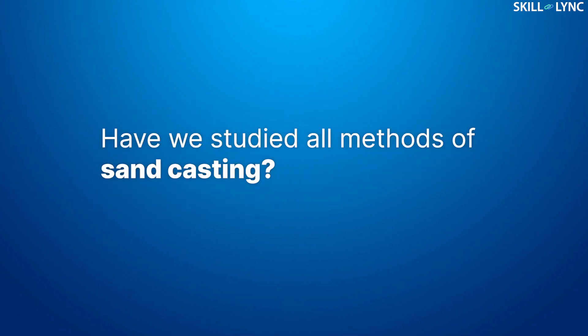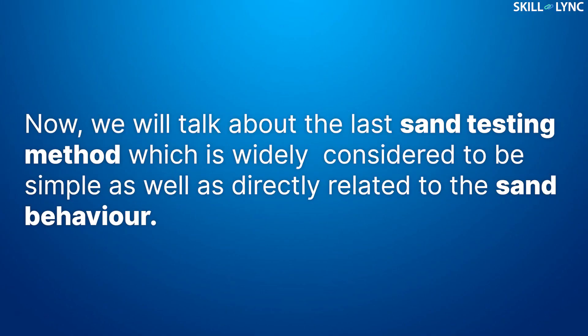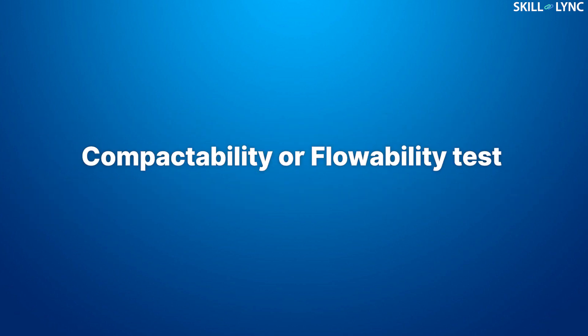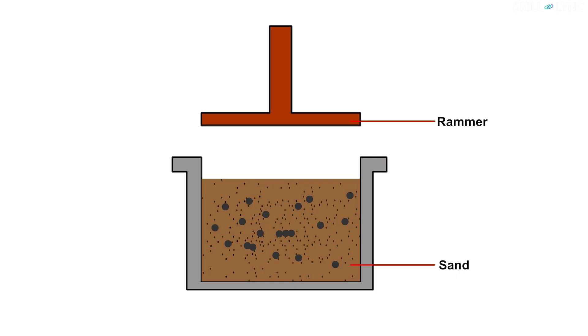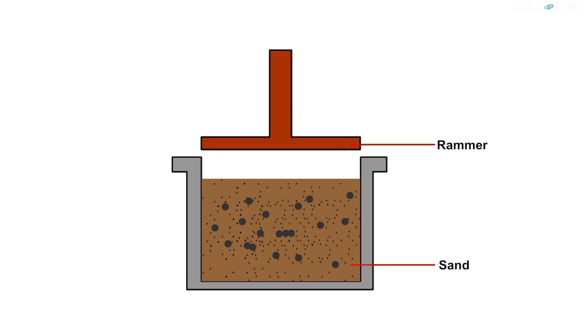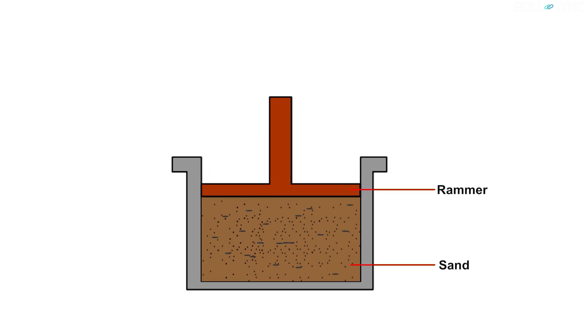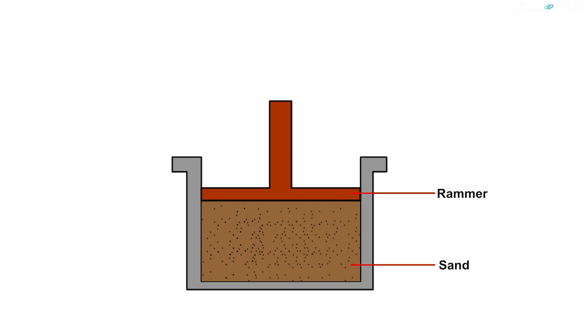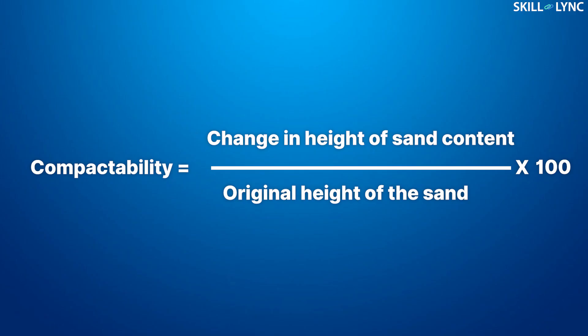The last sand testing method is widely considered to be simple and directly related to sand behavior — the compactability or flowability test. In this test, a fixed volume of sand is filled in a container and compressed with the help of a ramming equipment. As a result of this compressive force, the volume of sand inside the container decreases, and the percentage reduction in volume represents the compactability or flowability of the sand.